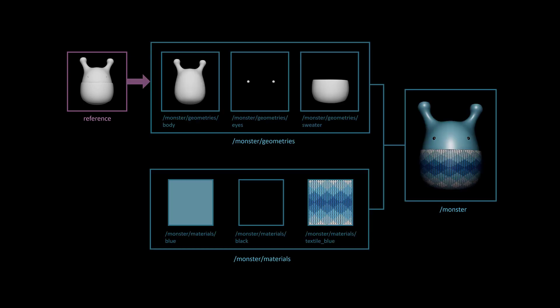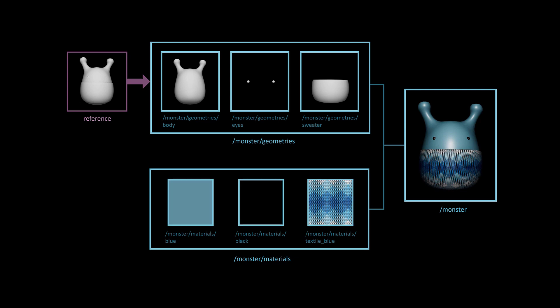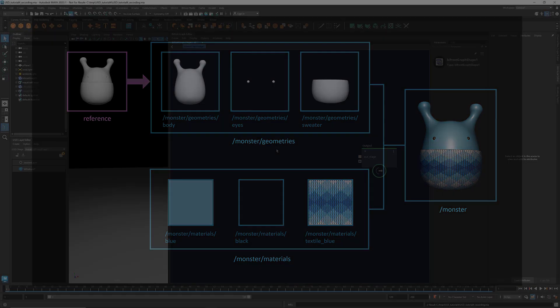We'll start with referencing this USD layer where the prim isn't bound to any material. Here's the structure of the stage that we're going to create. The parent prim monster has two children, geometries and materials. The prim geometries contains all the geometries that make up the monster. And the prim materials serves as a library where the definitions of the materials are stored. With this setup, we're going to bind materials to the monster's body, eyes and sweater. So let's jump right in.